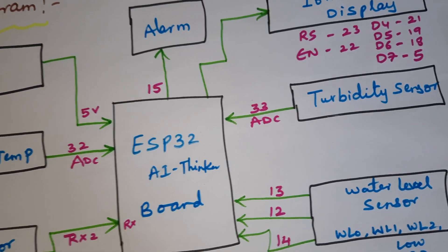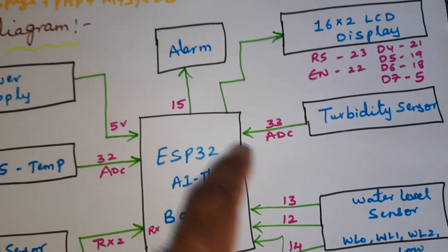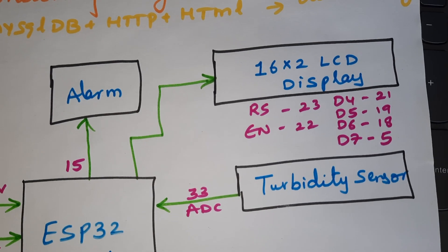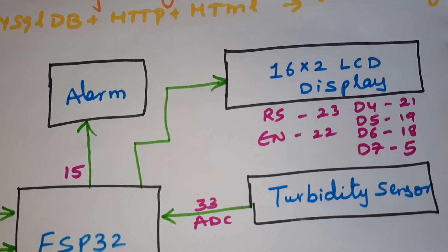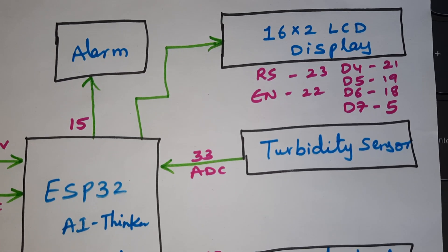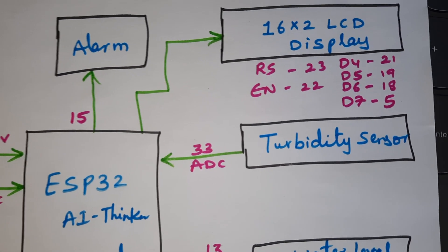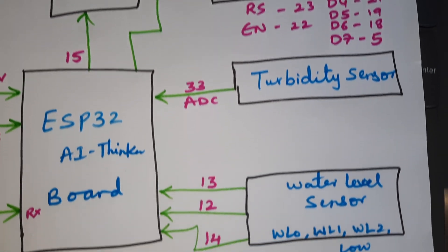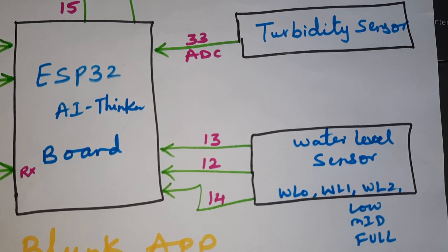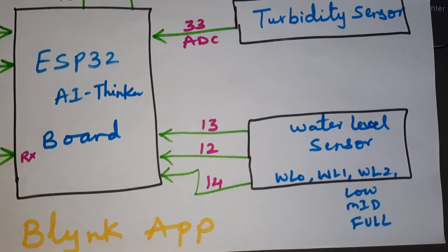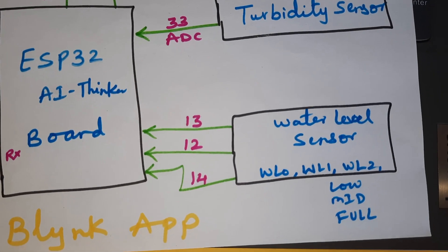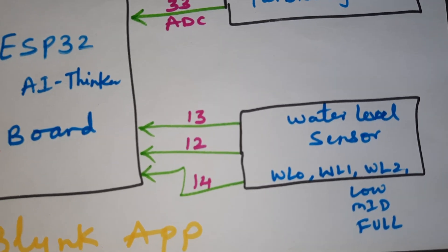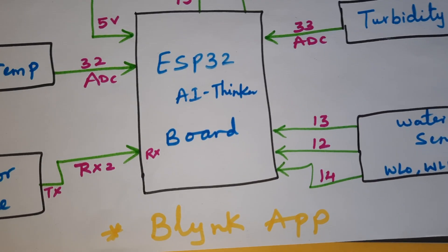The turbidity sensor is connected to the 30th pin of ADC, alarm connected to the 15th pin. A 16x2 LCD display is connected with RS, Enable, D4, D5, D6, D7 on GPIO pins 23, 22, 21, 19, 18, 5. Water level sensor outputs — WL0, WL1, WL2, WL3 for low, mid, and full — are connected to pins 12, 13, 14.